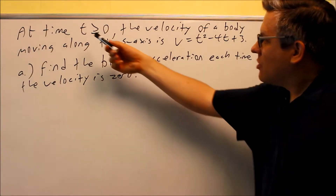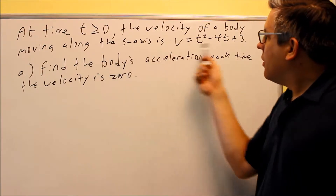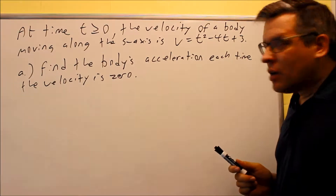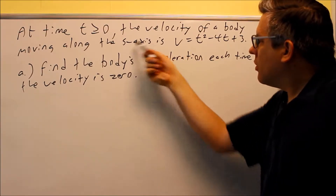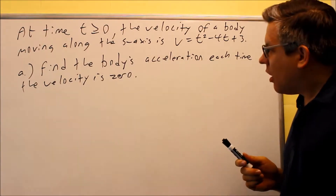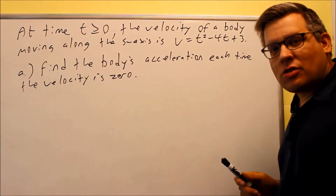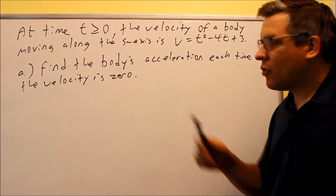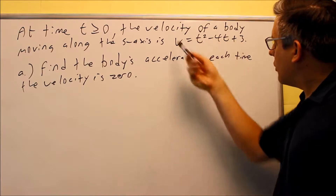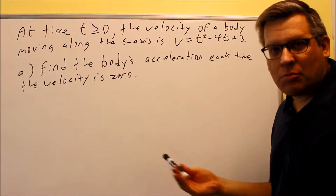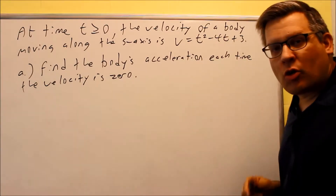For this problem, we're given that time t is greater than or equal to zero. The velocity of the body is given as this function. t is in terms of seconds, and it's moving along the s-axis, where s represents the displacement. It says find the body's acceleration each time the velocity is zero. So we have to first find out where this velocity is zero — if it's zero, it's not moving. Once we find those times, we'll put them into the acceleration function.